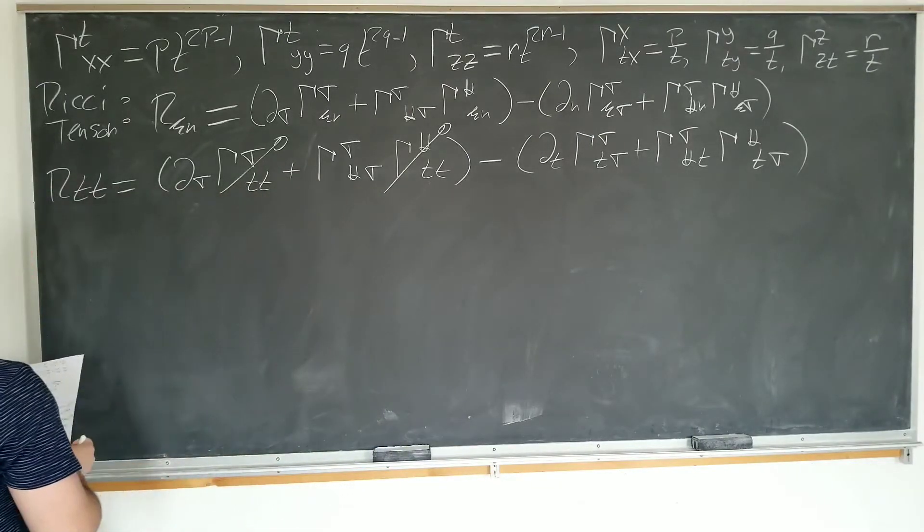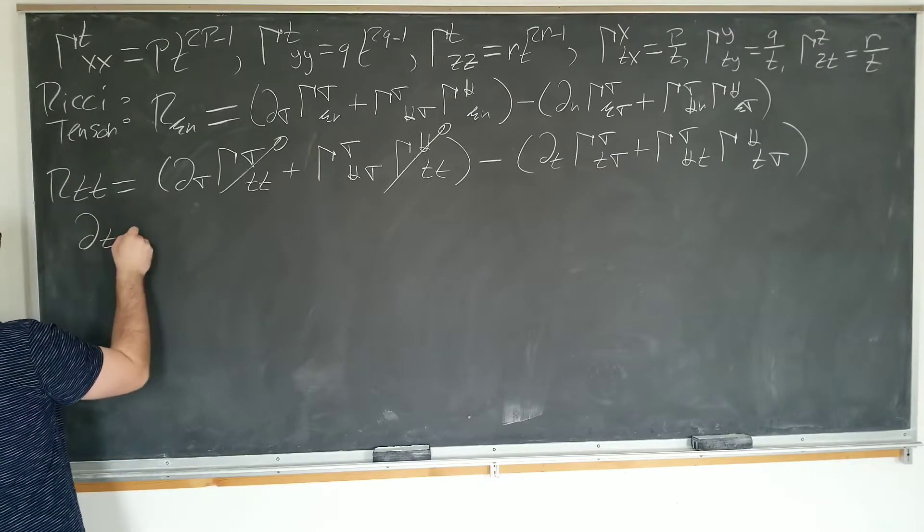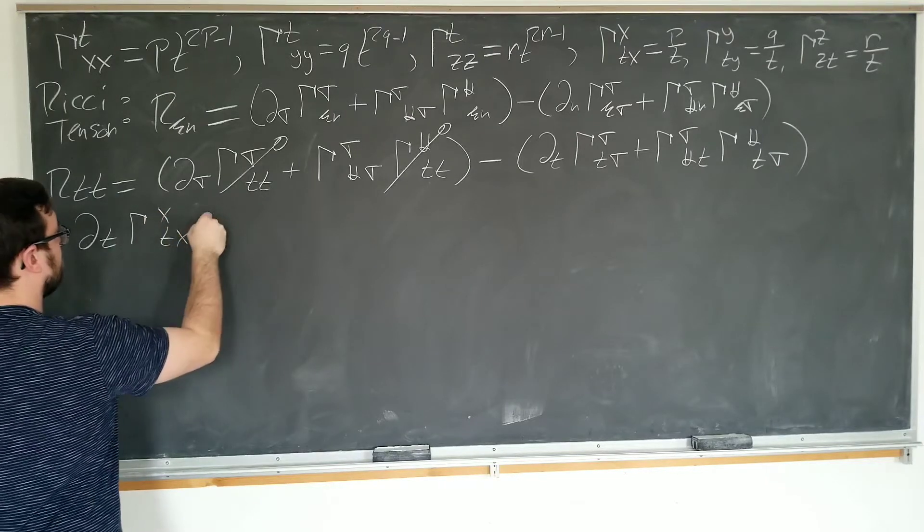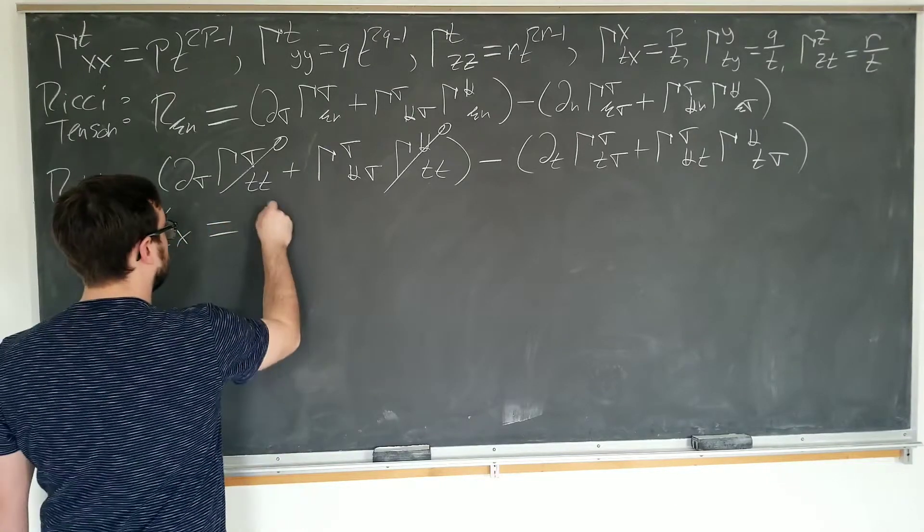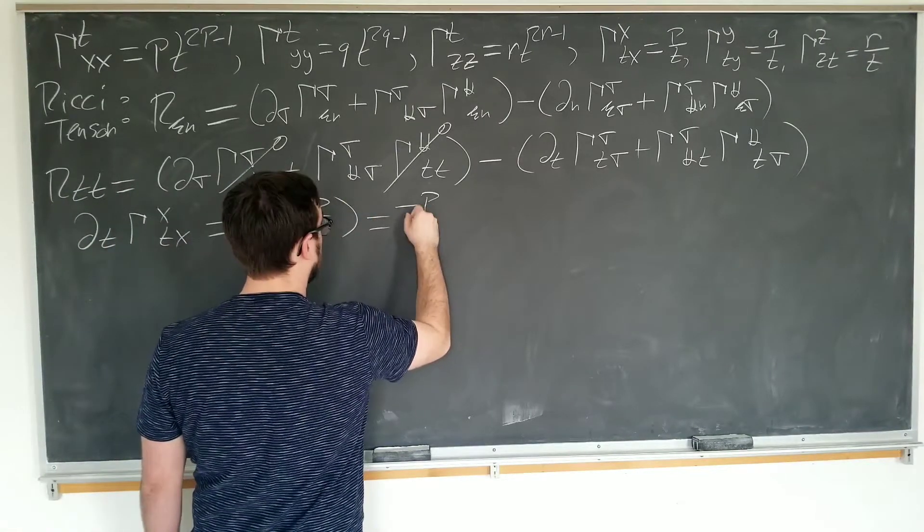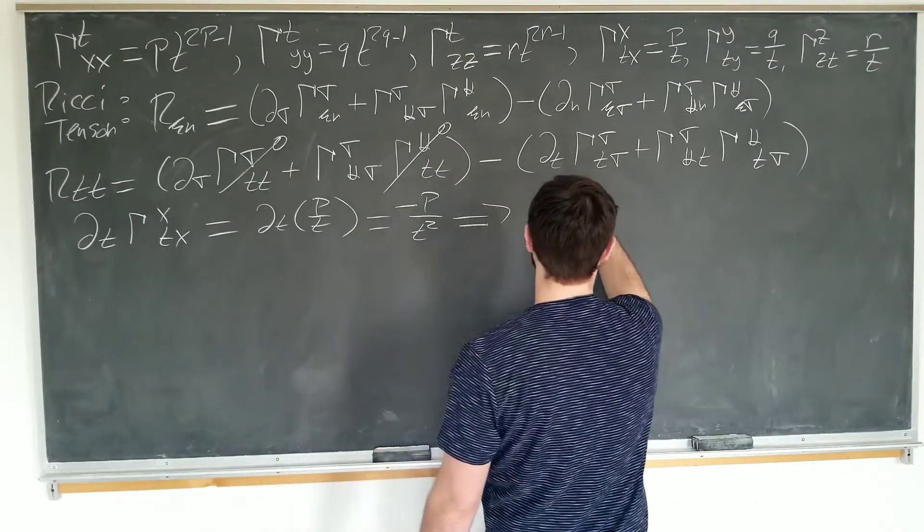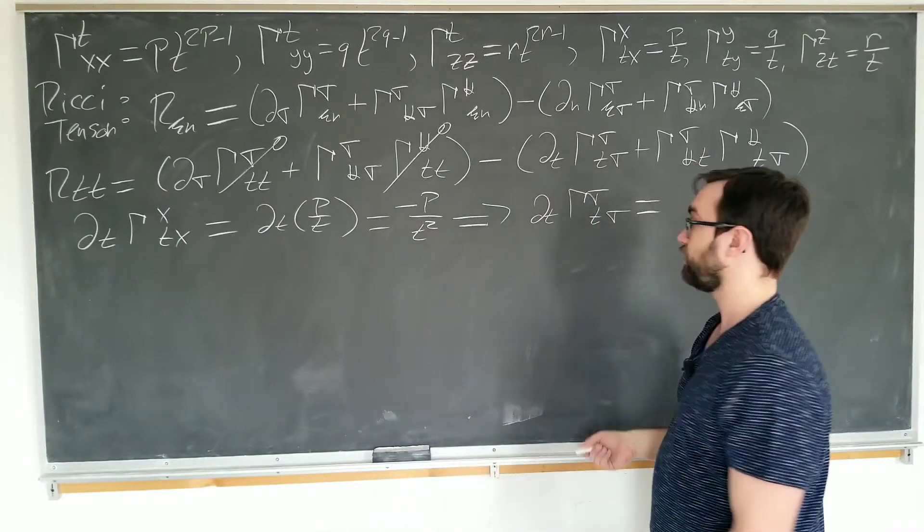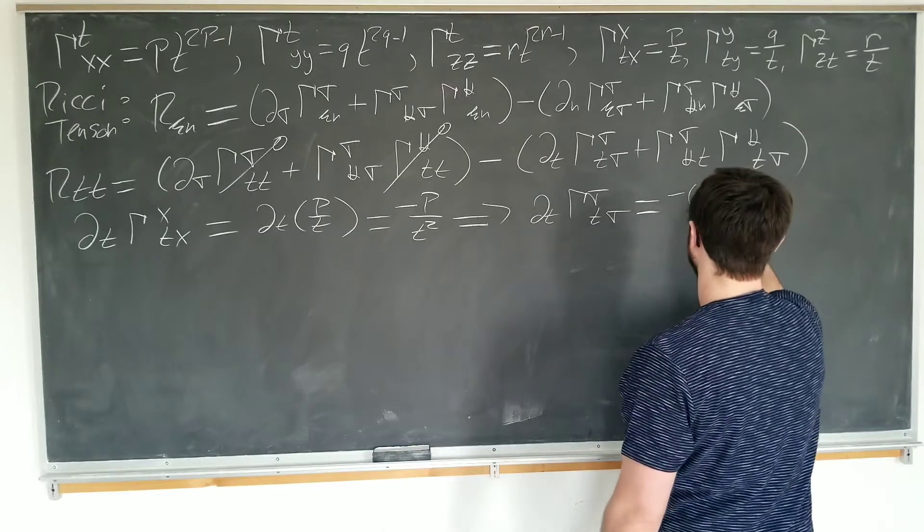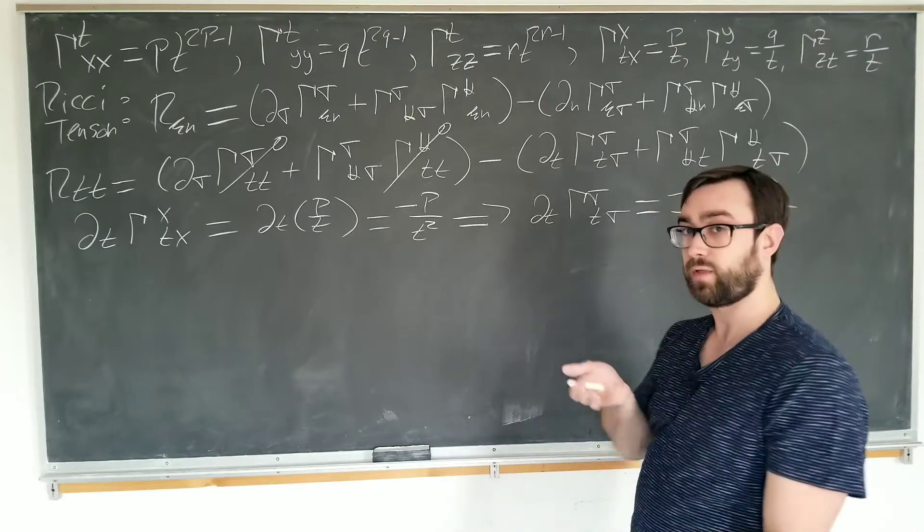So we're going to write this for you as follows. So we're going to be considering D_t of the first one, X_t_x first of all. And this is going to be the derivative of P over T, which is nothing but minus P over T squared, which tells us that when we sum them up, we're just going to add up the same thing with P being replaced by Q and R. So it's just minus (P plus Q plus R) over T squared. That one really wasn't that bad.